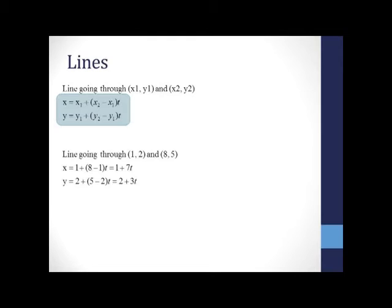Let's find the parametric equation of the line going through 1, 2, and 8, 5. If we let 1, 2 be x1, y1 and 8, 5 be x2, y2, then x equals 1 plus 8 minus 1 times t, which is 1 plus 7t. Similarly, y equals 2 plus 3t.